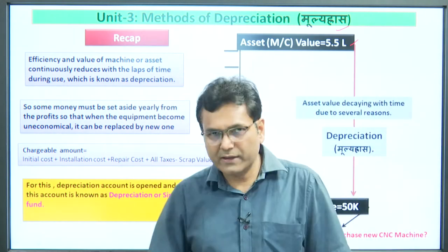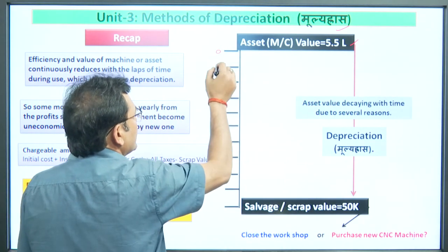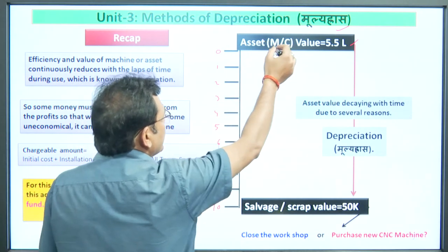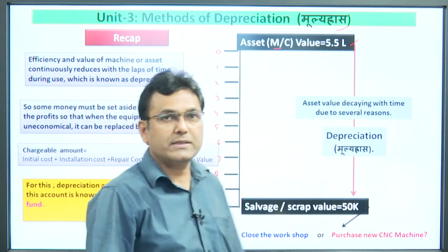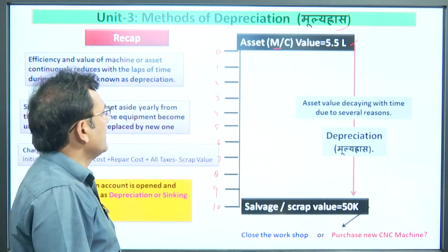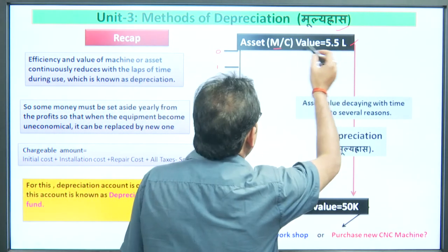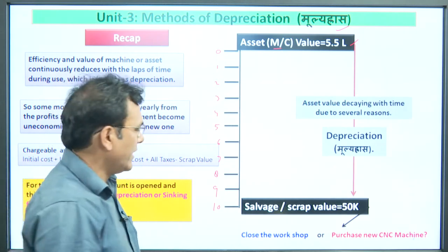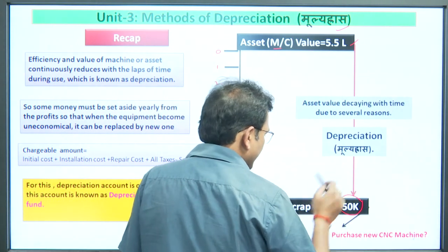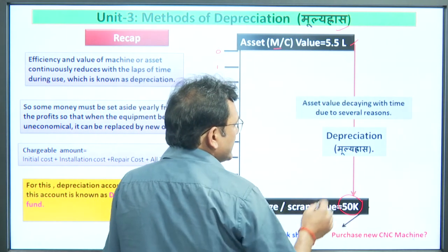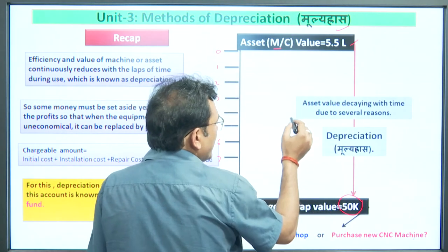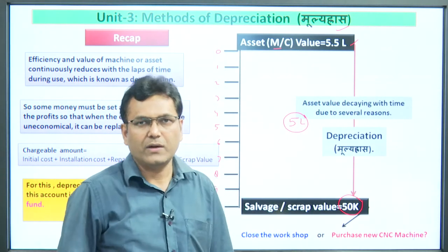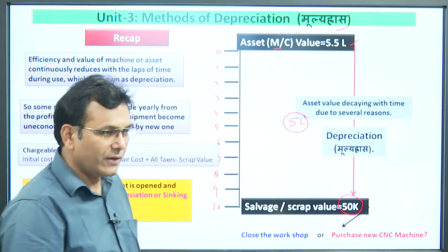The service life of that machine was 10 years. We installed it at time zero and used it through years one to ten. After 10 years, when we went to sell the machine — whose initial cost was 5.5 lakh rupees — we found it was only selling for 50,000 rupees. This means over the 10-year working period, 5 lakh rupees of machine value had decreased.